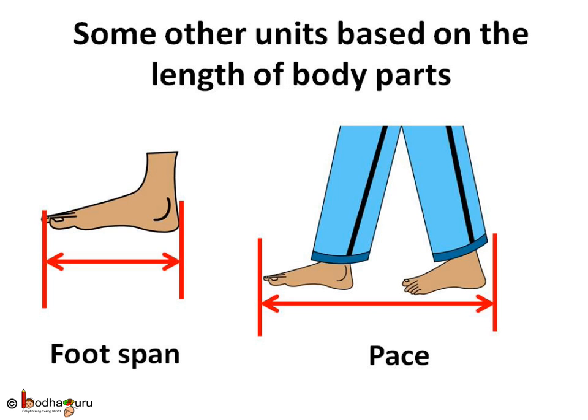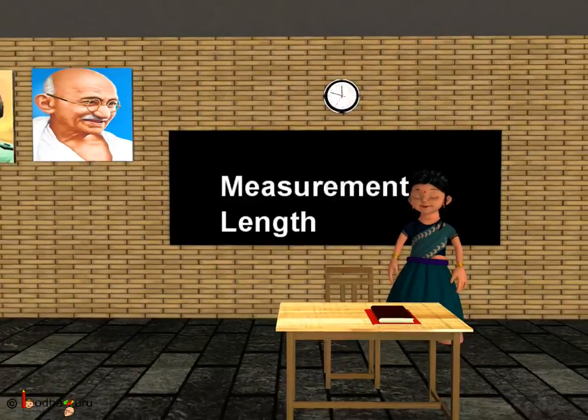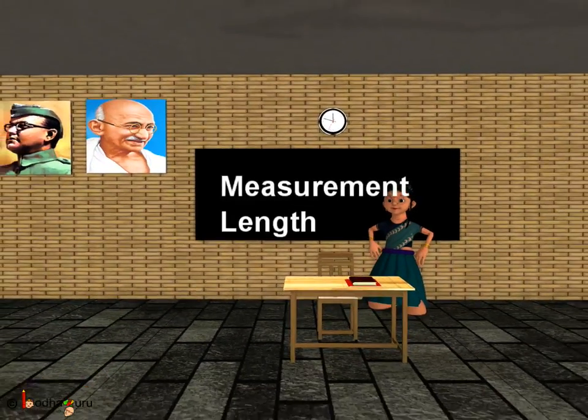Not just hands — even other body parts like the foot were used to measure length or distance. For example, foot span, which was the length of a person's foot. And the distance of a step was also used, which was called a pace. That was all for today. Bye-bye, children.